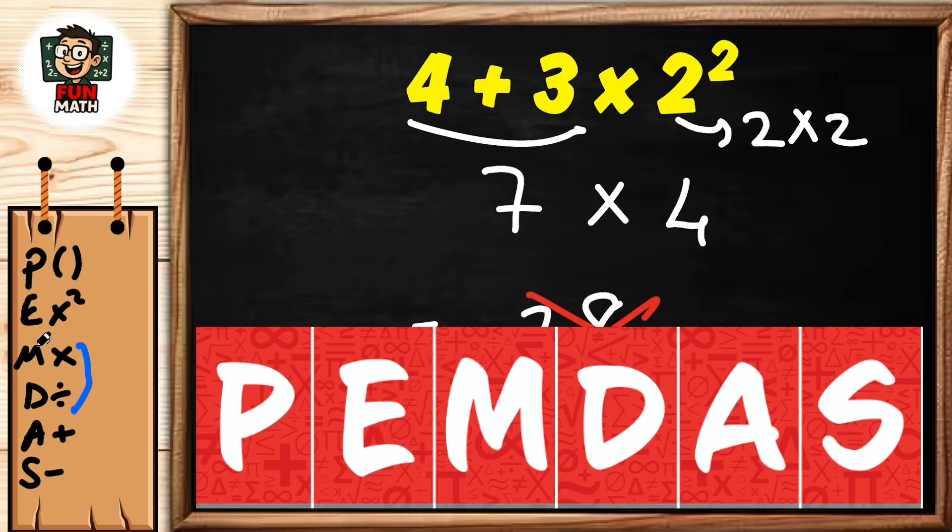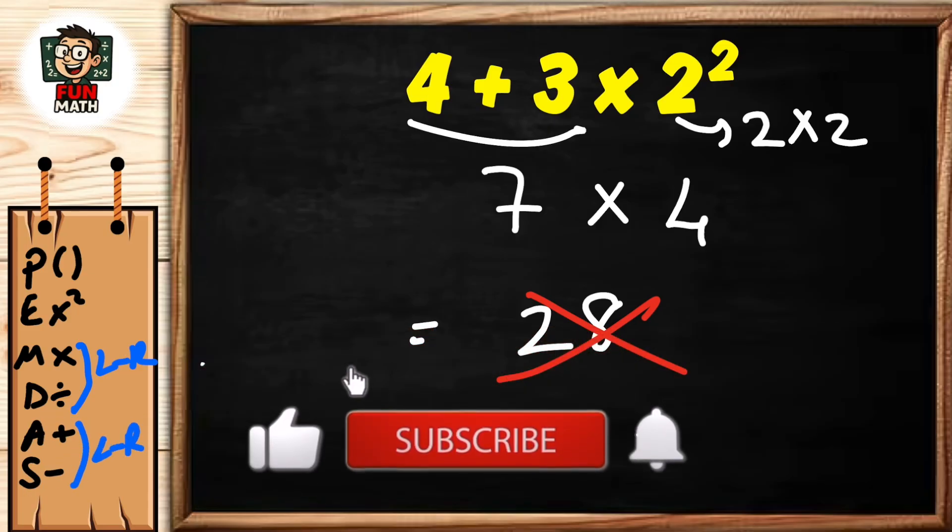We have one more feature here: there is no order between multiplication and division, operations are performed from left to right. Similarly, there is no order between addition and subtraction, operations are performed from left to right. Now let's apply this rule to our equation.